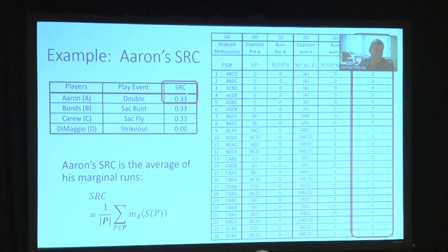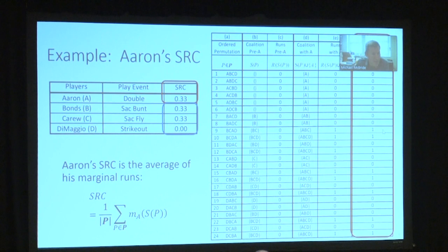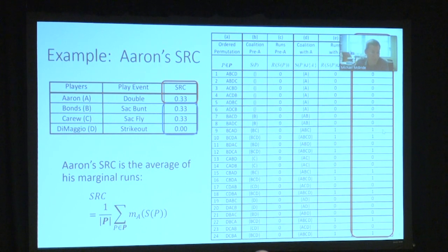Hank Aaron receives one third of the credit for that single run that scores. In this inning, Bonds and Carew also receive a third of credit, and DiMaggio receives zero credit. Why do Aaron, Bonds, and Carew receive the same credit? Their three contributions were each equally necessary for the run that scored. We might normally think a double should count more — and in fact, a player who hits more doubles will be part of more run-scoring coalitions — but in this particular inning, they each deserve equal credit.